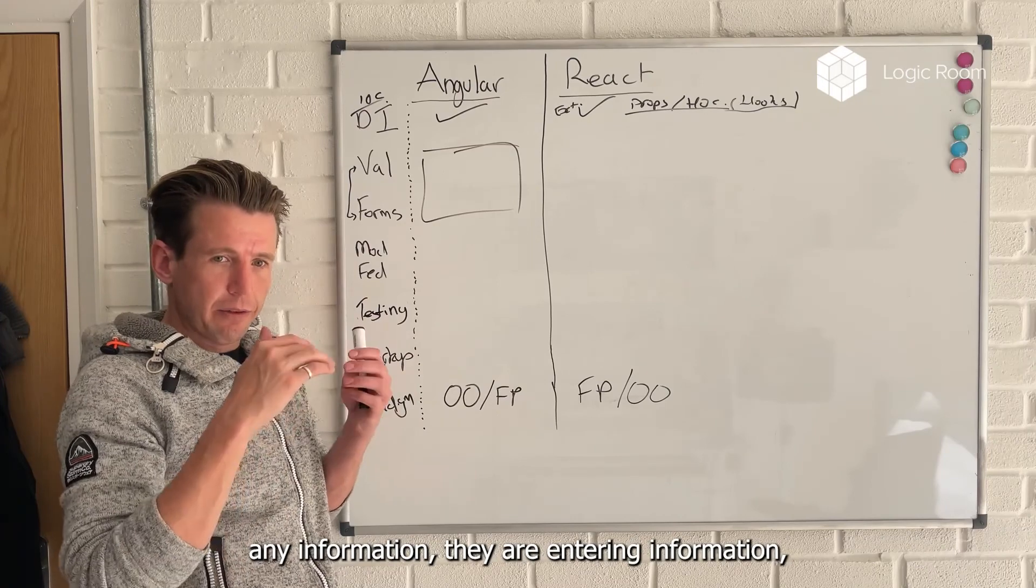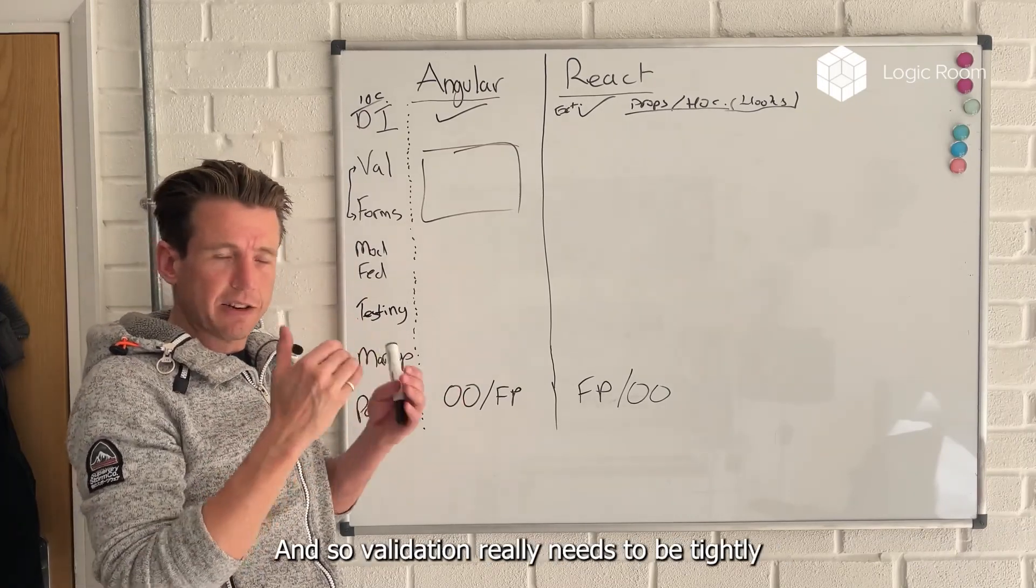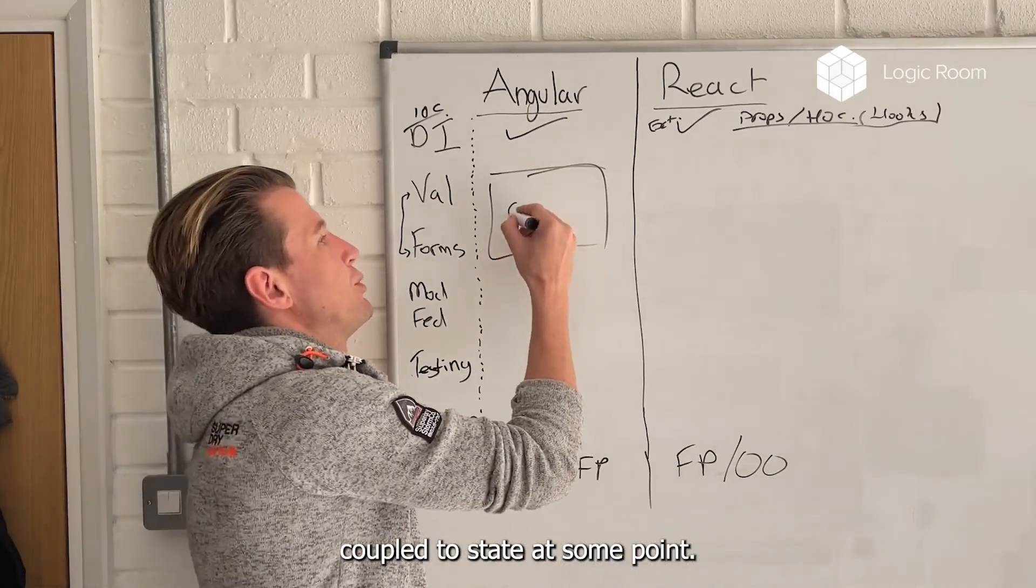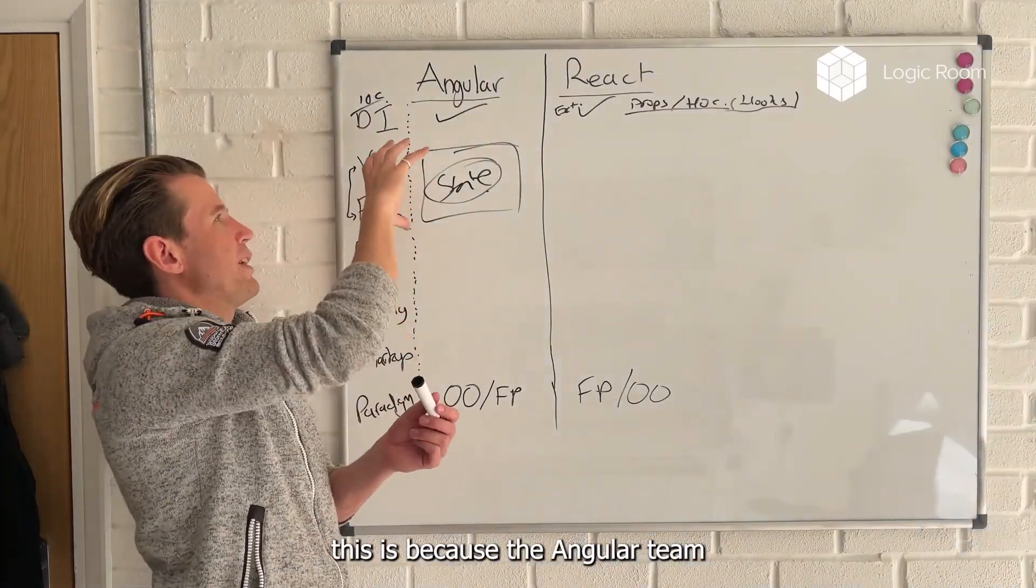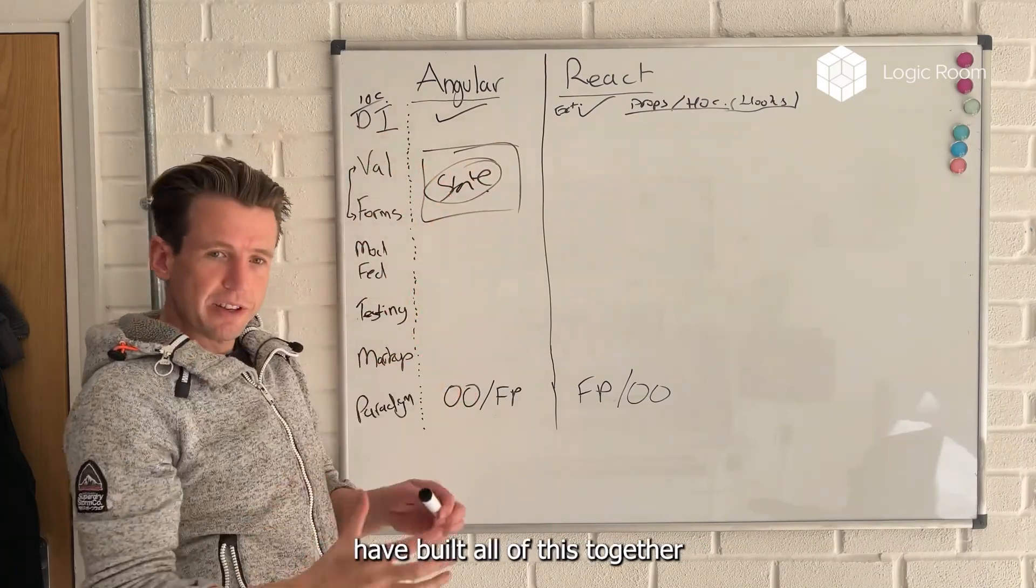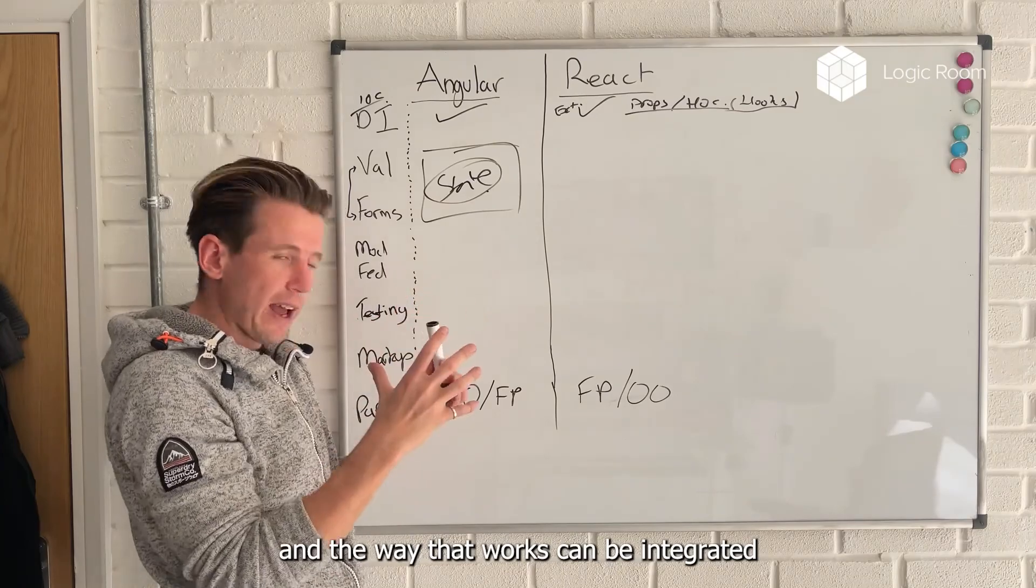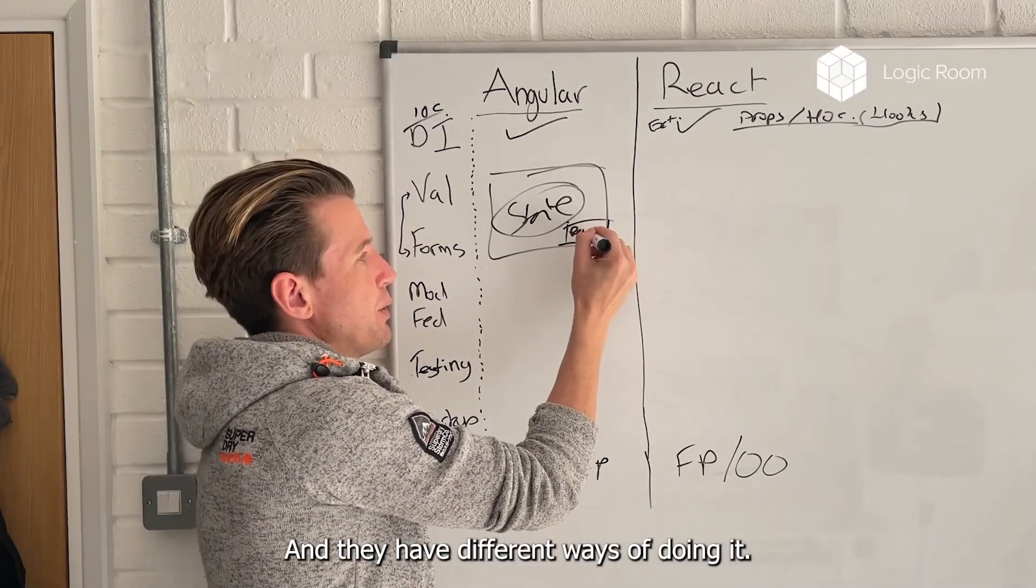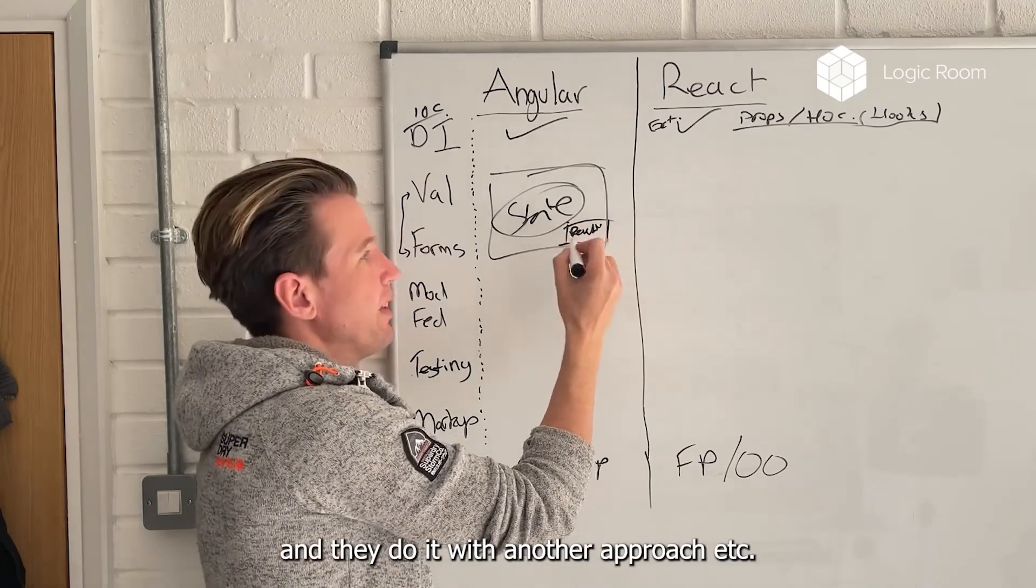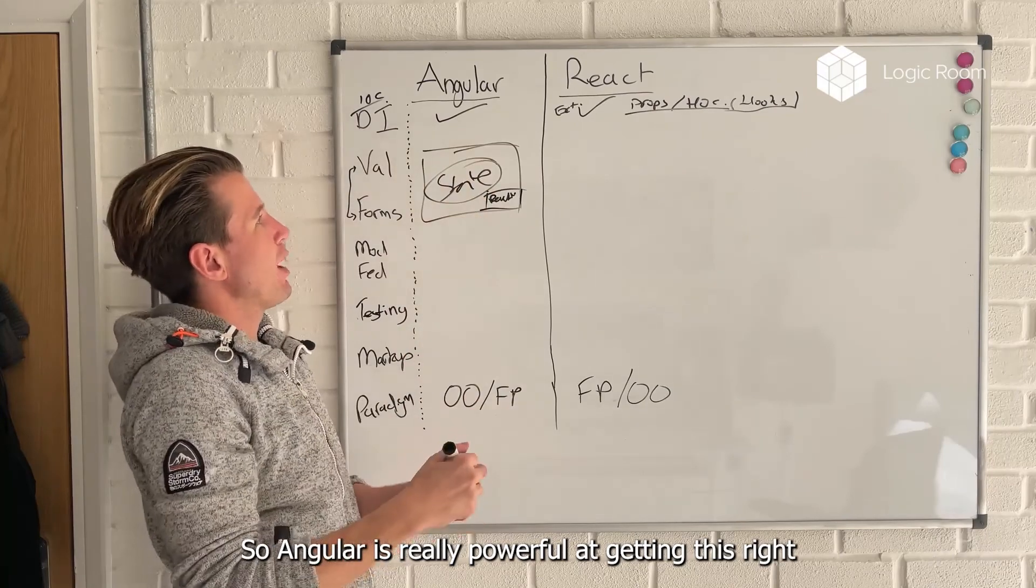And there are lots of different states that a validation can be in. They haven't entered any information, they are entering information, they've finished entering information. And so validation really needs to be tightly coupled to state at some point. The reason that Angular is quite good at this is because the Angular team has built all of this together. And so they understand validation and state and all these things, and the way that works can be integrated into a single way of doing it. They do it with reactive forms and they do it with another approach. So Angular is really powerful at getting this right.